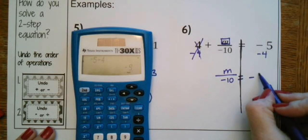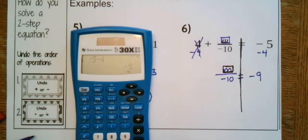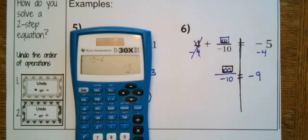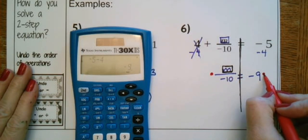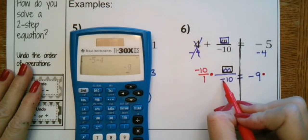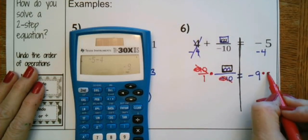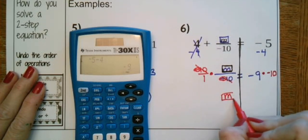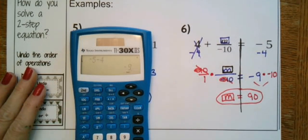Here we are — we are the M and we're connected to our 10 best friends with a bad attitude, connected with division. When mom comes down and says the party's over, we undo division with the inverse of multiplication — multiply by negative 10. That's negative 10 over one, so those 10 closest friends cancel over here. We get M equals negative nine times negative ten, which is positive 90. That is our value of M.